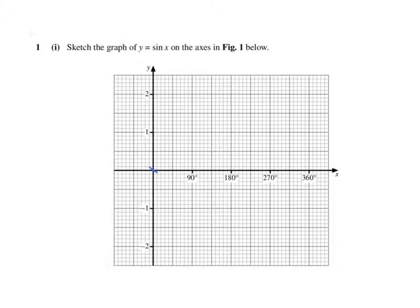So the sine of 0 is 0, the sine of 90 is 1, the sine of 180 is 0, the sine of 270 is minus 1, and the sine of 360 is 0.